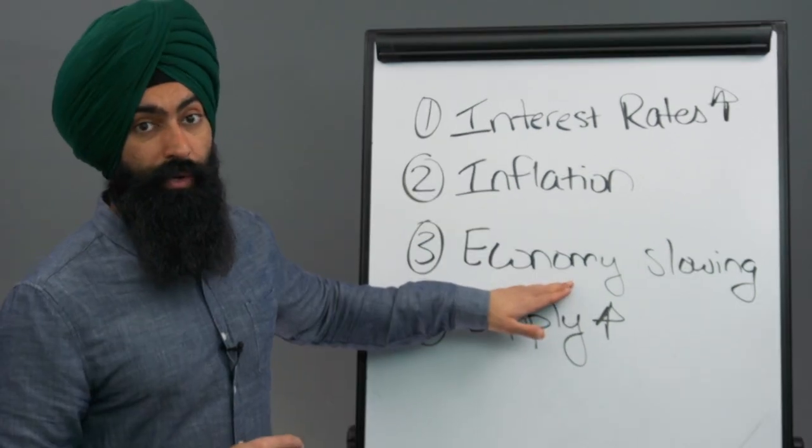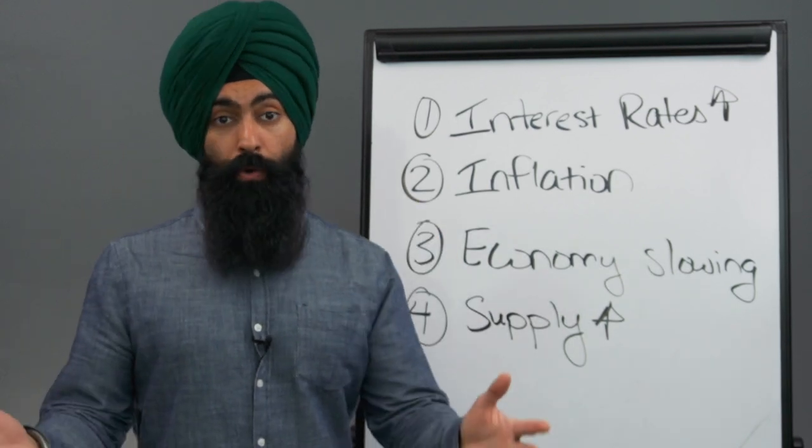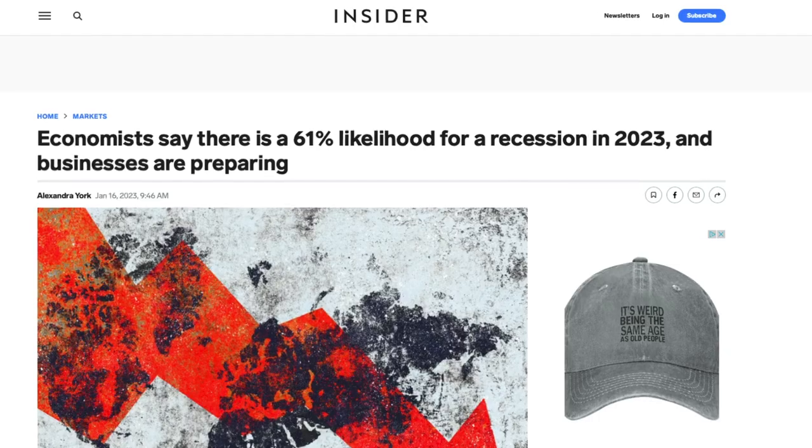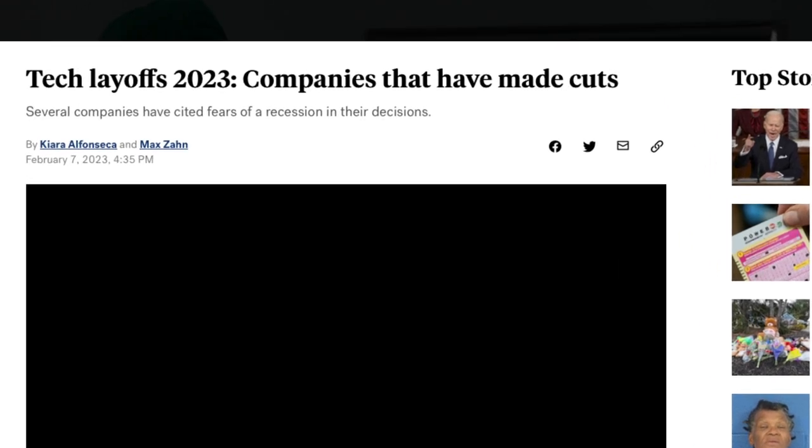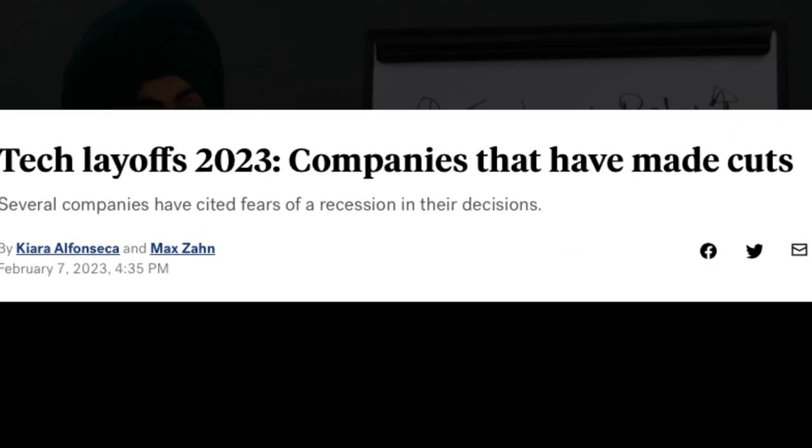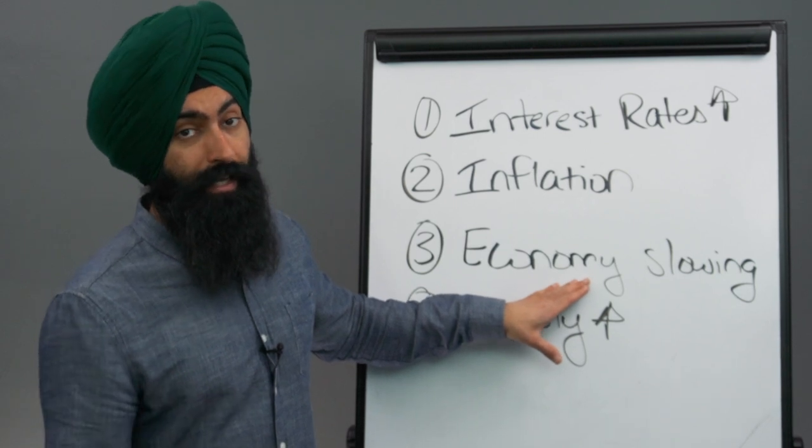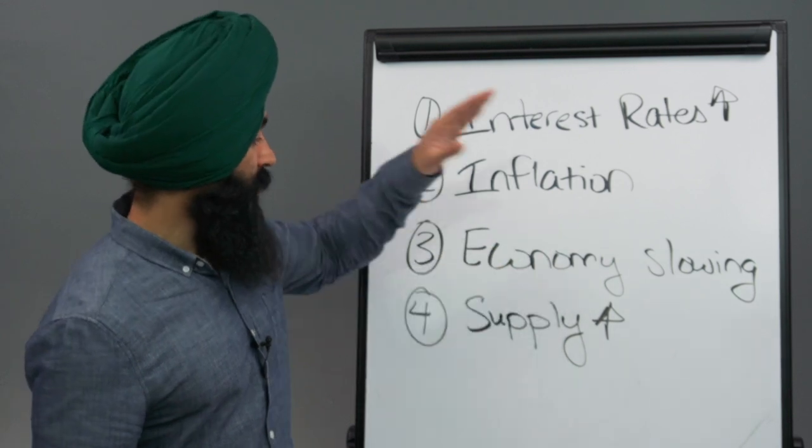Third, we're seeing the economy slowing. During 2020 and 2021, people's incomes actually rose because they got so much free money from the government. Today, incomes are falling, especially when you compare it to inflation because, for one, we're seeing layoffs happen across the board in so many different industries, and companies are having to pull back. Some companies can't give the same bonuses and raises that they could before because the economy is slowing.